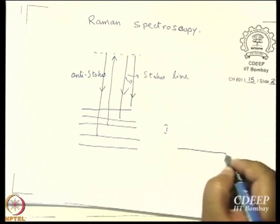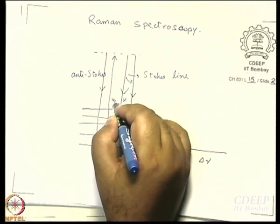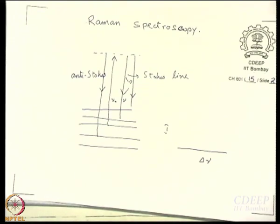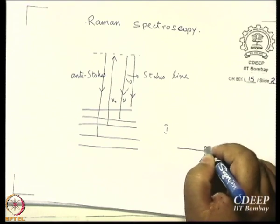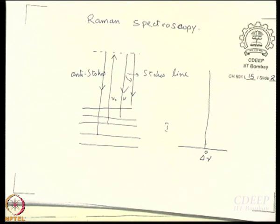So now instead of drawing absolute frequencies, I can draw delta nu and plot intensity versus delta nu. Delta nu is: whatever is the frequency here minus this frequency, nu minus nu0. So let us say this is a zero line — will you get a line at delta nu equal to 0? Yes, the strongest line will be at delta nu equal to 0. But that is not the Raman line, it is called the Rayleigh line. Raman was younger than Rayleigh — Rayleigh discovered the easy thing earlier. Delta nu equal to 0 is the Rayleigh line. You put in 400 nm light, you get out 400 nm light — it is just scattered.